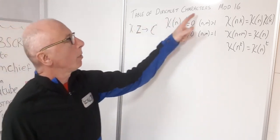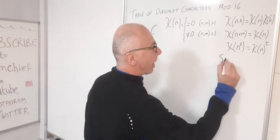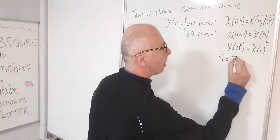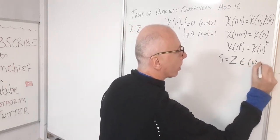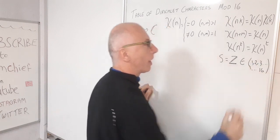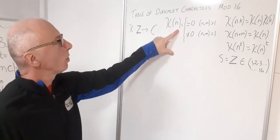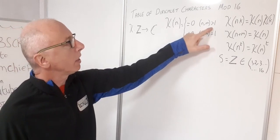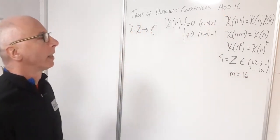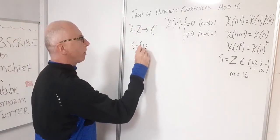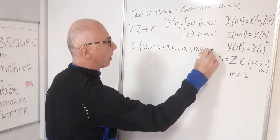For our table of Dirichlet characters modulo 16, we set up a group S containing the integers 1 to 16. So S equals {1, 2, 3, all the way up to 16}. We can distinguish parts of this group using the chi function. Our modulus M is 16, so S equals {1, 2, 3, 4, 5, 6, 7, 8, 9, 10, 11, 12, 13, 14, 15, 16}.